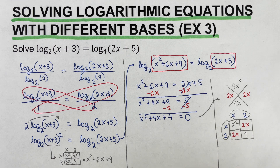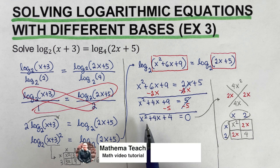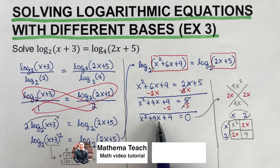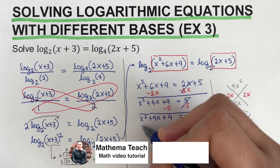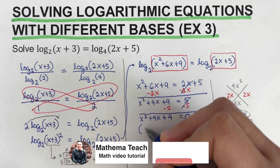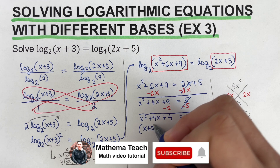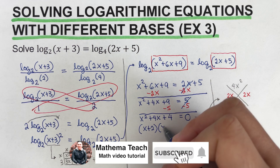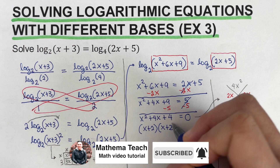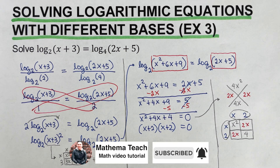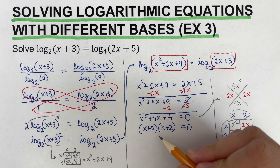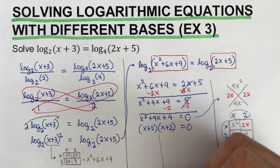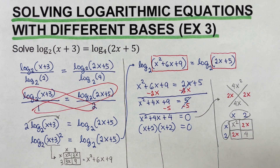The factors of x² + 4x + 4 are (x + 2) and (x + 2), so we can write this as (x + 2)(x + 2) = 0. Using the zero product property, we solve for x.